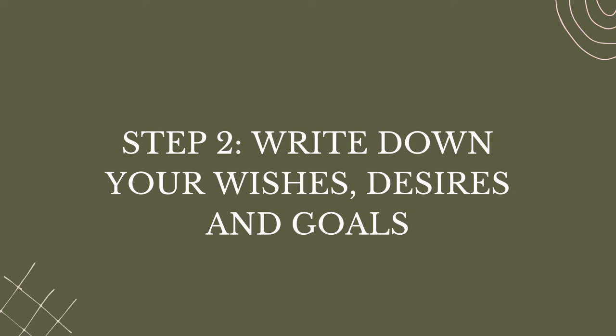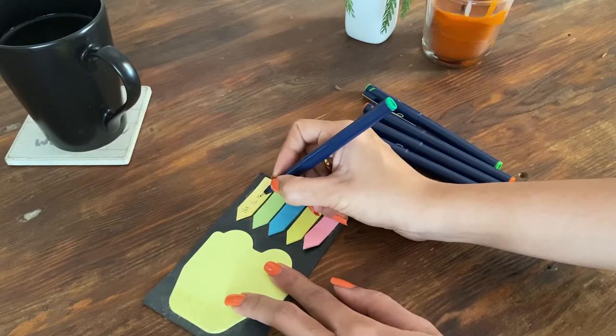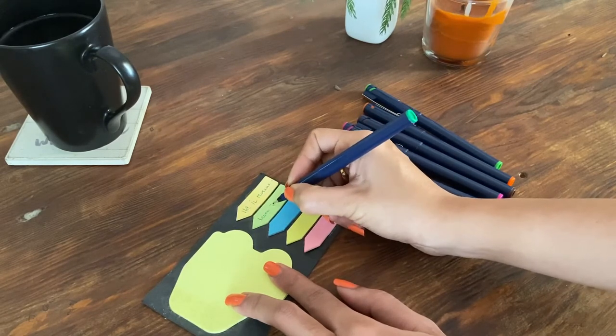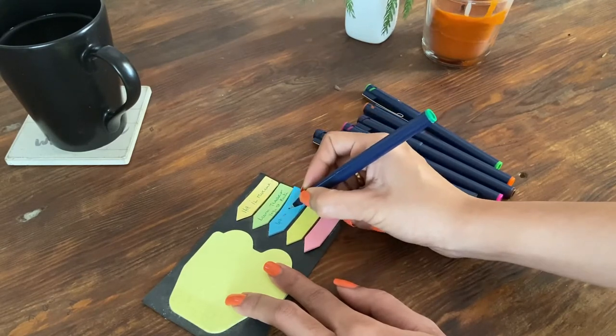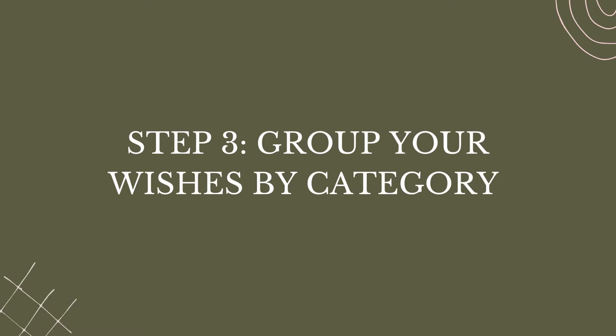Step two: write down your wishes, desires, and goals. Now that you know where you are standing, write down your deepest desires and wishes. Start going deep into your soul and discover things you hadn't acknowledged about yourself before. Write them all down — it's okay if it seems silly. Just write down every bit of it.